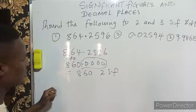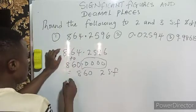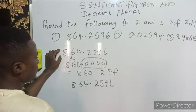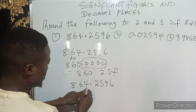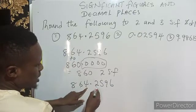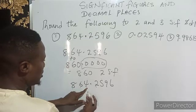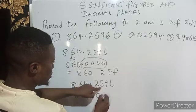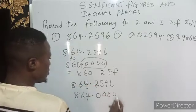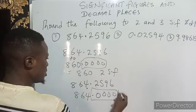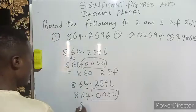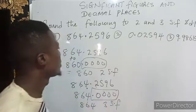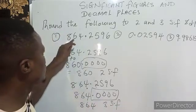For three significant figures, you have 864.2596 — you count one, two, three and stop. This is your target. The number next to it is not even up to five, so you are adding nothing. You still have 864; every other number turns to zero, and zero is not significant, so the answer is just 864 to three significant figures.